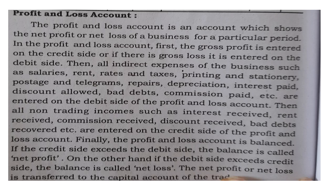The profit and loss account is an account which shows the net profit or net loss of a business for a particular period. In the profit and loss account, first the gross profit is entered on the credit side, and gross loss is entered on the debit side. Afterwards, indirect expenses — such as tax, printing, stationery, telegram, repairs, depreciation, interest paid, bad debts, commission paid — everything is recorded in the profit and loss account. Whatever the difference available in the profit and loss account, it may be treated as net profit or net loss, and the balance is transferred.